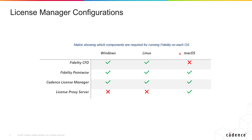It is also important to keep in mind on which platforms these different software packages can be installed. If you're using a Windows or Linux operating system things are a little easier because the Fidelity CFD, Fidelity Pointwise, and the Cadence License Manager can all be installed on these two operating systems.